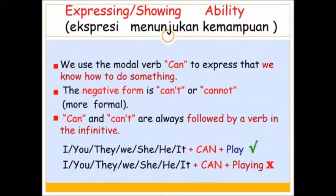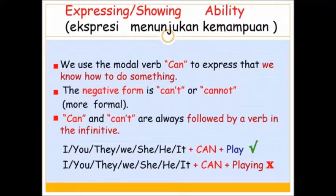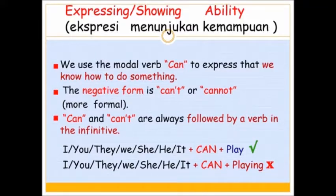In English, ada banyak modal verbs — contohnya can, could, would, should, might, ought. Tapi di sini kita akan menggunakan modal verb 'can', yaitu untuk menunjukkan kalau kita mampu atau bisa mengerjakan sesuatu dalam bentuk present tense. Untuk negative form-nya, kalau kita mau mengatakan kita tidak mampu, bentuknya yaitu can't atau cannot. Dan biasanya can atau can't ini diikuti oleh a verb in the infinitive — kata kerja asli tanpa tambahan apapun.